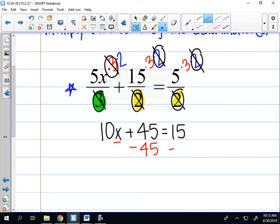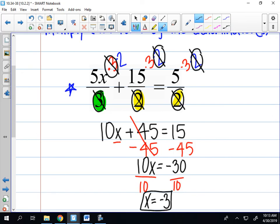So if I want to get the x by itself, I'm going to take away 45 and whatever I do to one side I have to do to the other. 45 minus 45 is 0, and I'm left with 10x on that side. 15 minus 45 is negative 30, and to get the x by itself I want to divide both sides by 10. So my final answer is x equals negative 3.